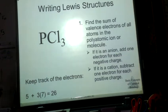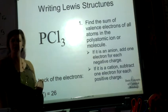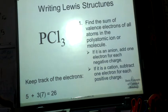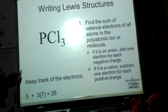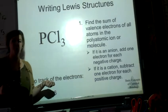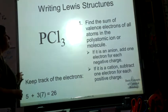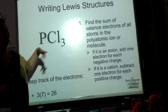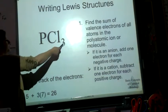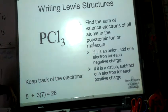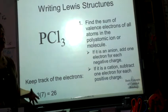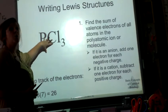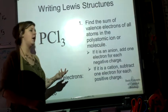Let's talk about the rules for writing and drawing a correct Lewis structure. The first rule is to find the sum of the valence electrons of all atoms in the molecule or polyatomic ion. For PCl₃, phosphorus has five valence electrons and chlorine has seven, but there are three chlorines, so 21 plus 5 gives 26 valence electrons total — that's how many we need to account for.